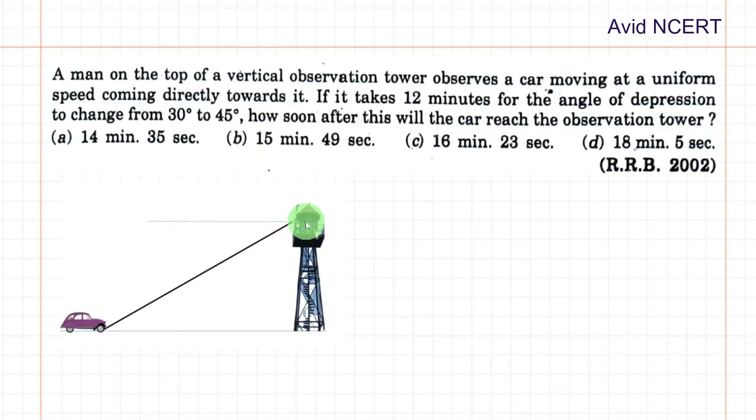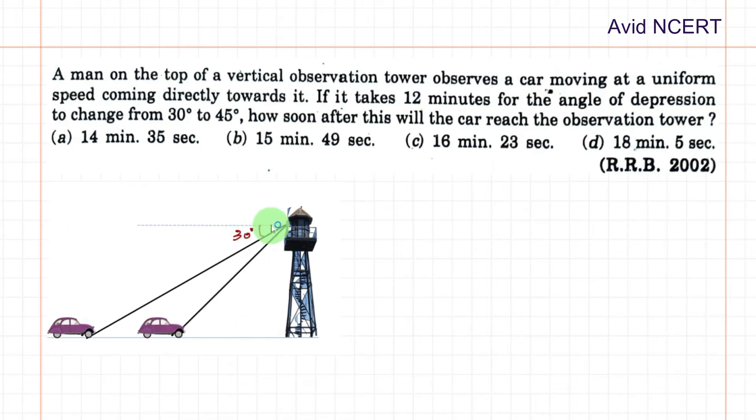When the man is observing from the top of the vertical tower, the car is moving at uniform speed directly towards it. As it moves, the angle changes to 45 degrees as it travels towards the tower. The car has moved from 30 degrees to 45 degrees angle and it takes 12 minutes to reach from this point to this point.